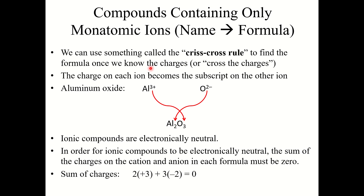To get the formula from the charges, we use the criss-cross rule: the charge on each ion becomes the subscript on the other ion. For aluminum oxide, Al is 3+ and O is 2−. The 3 becomes the subscript on oxygen and the 2 becomes the subscript on aluminum, giving Al2O3. This works because ionic compounds must be electronically neutral — the charges must sum to zero. Here, 2×(+3) + 3×(−2) = 0, confirming the formula is correct.